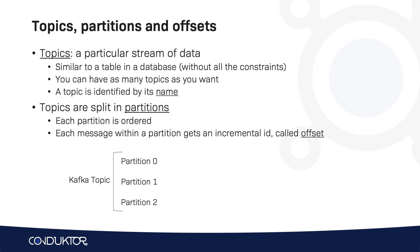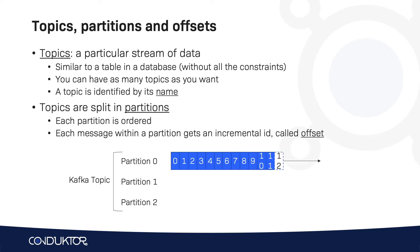In Kafka we talk about topics, partitions, and offsets. If we take an example of a Kafka topic with three partitions and look at partition 0, it will have the message with offset 0, then offset 1, 2, 3, and so on, maybe all the way up to 11, and then the next message to be written is going to be offset number 12.